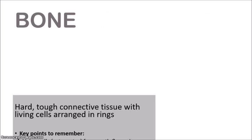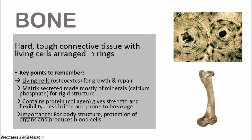Let's look at bone to begin with. Bone is that hard, tough connective tissue made of living cells arranged in rings, as you can see in the diagram. It actually looks like a trunk that is sliced open with concentric rings. In the center of the bone is a canal where blood vessels and nerves run through. After all, bone is living tissue, so it needs to be supplied with nutrients and oxygen in order to survive.